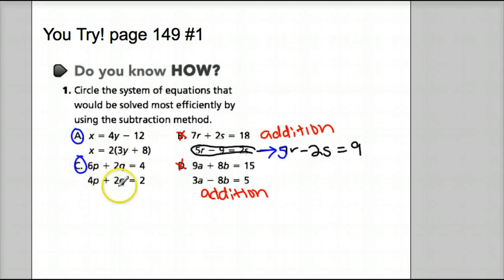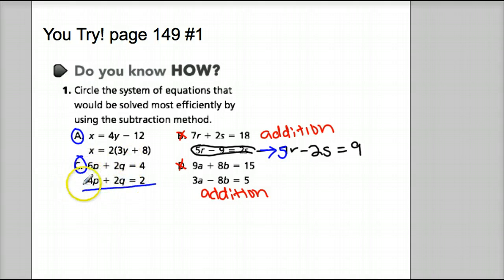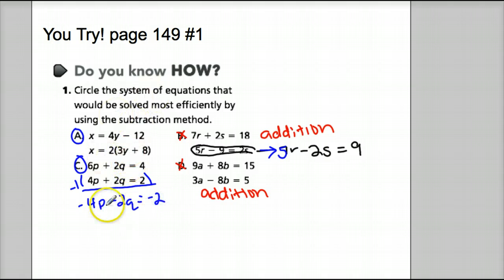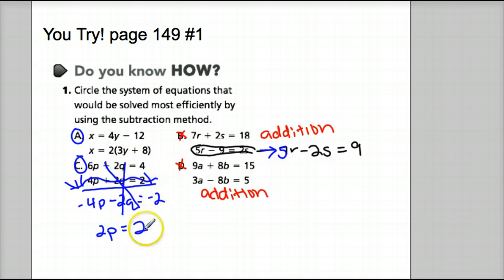For C, we also see that we use subtraction method because our Q variables both have a positive 2 as a coefficient. If we wanted to solve this out, we would multiply one of these by negative 1 — let's say this one — and it now becomes negative 4P minus 2Q equals negative 2. For elimination, you're just trying to eliminate a variable. Our eliminated variable is Q. So 6P plus negative 4P is 2P, and that equals 4 because 4 plus negative 2 is positive 2. So that would mean P equals 1. We would put that P back in to see what Q equals, but we don't need to do that because it's just asking what is the most efficient way.